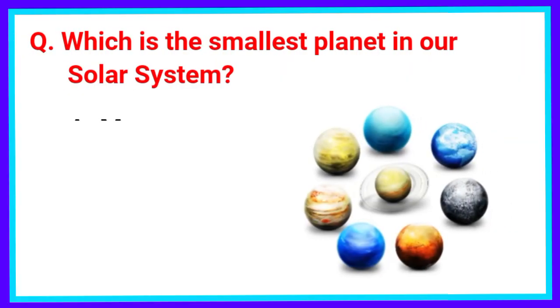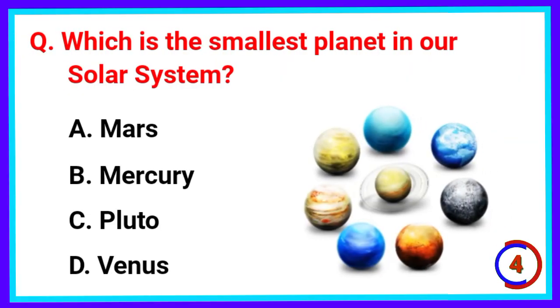Which is the smallest planet in our solar system? The correct answer is Option B. Mercury.